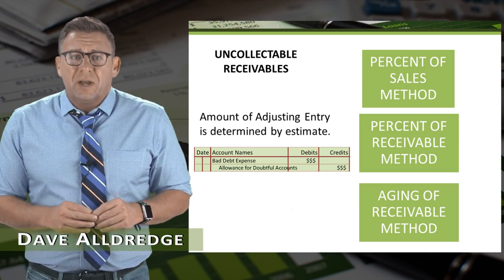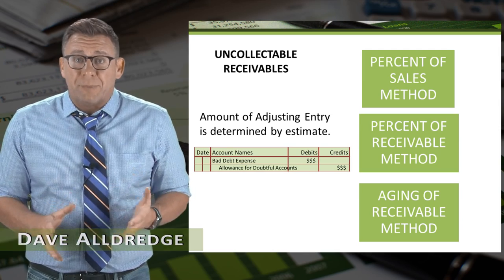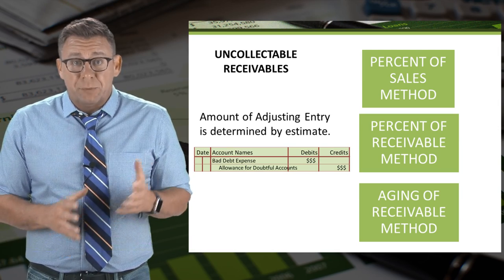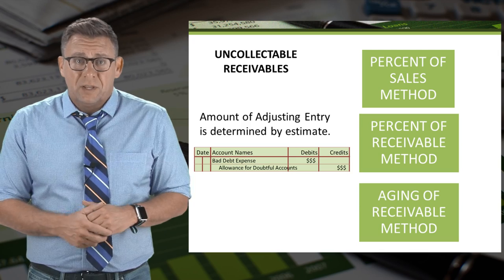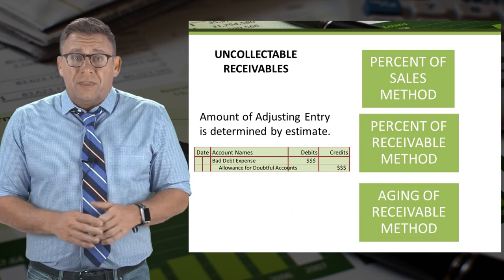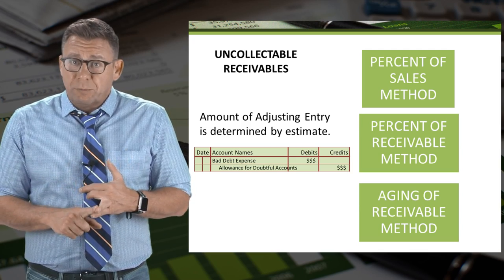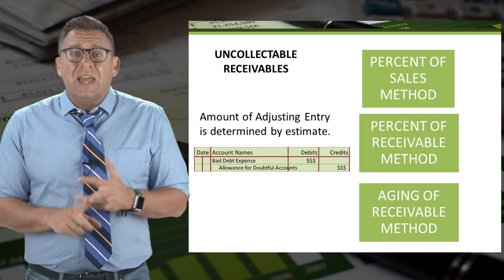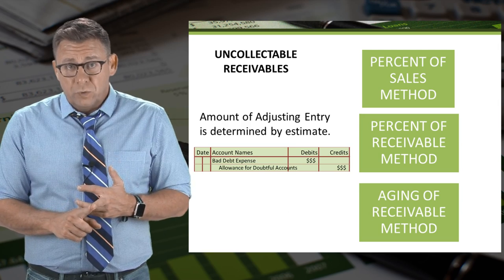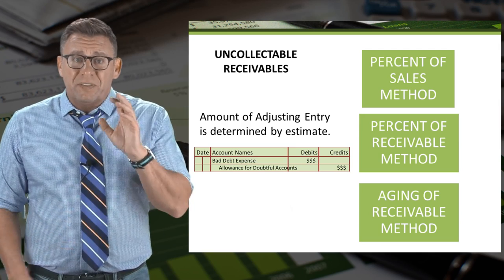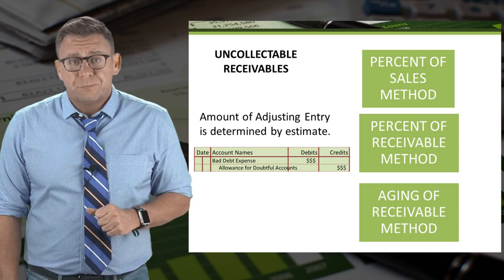There are three common ways to estimate the amount of bad debt expense to be recorded under the allowance method: the percent of sales method, the percentage of receivables method, and the aging of accounts receivable method. We will learn about the aging of receivables method in this short video.